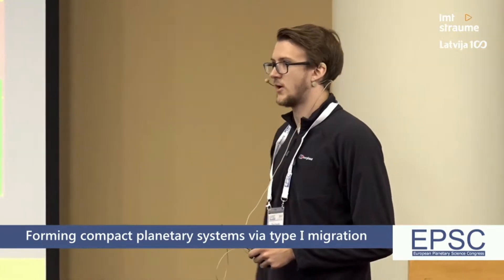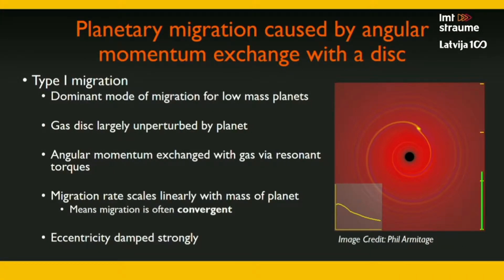I mentioned two things there: type 1 migration and mean motion resonances. I want to give a quick overview for those of you who maybe aren't so familiar with those things. So type 1 migration — we've got a nice little simulation of this going on here. This is what happens when a planet forms in a disk around a young star. That disk is made out of gas and dust. You see the planet here in our simulation — it's a little yellow dot, and it interacts with the gas in the disk. The migration rate scales linearly with the mass of the planet.